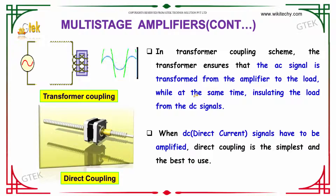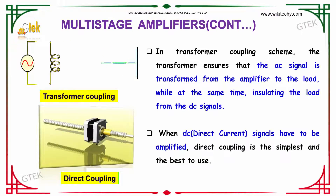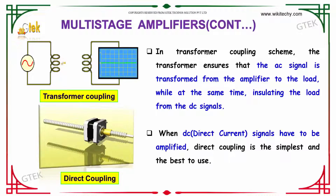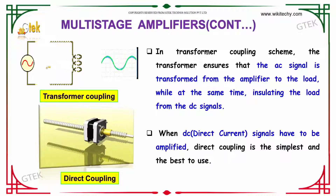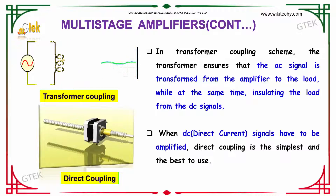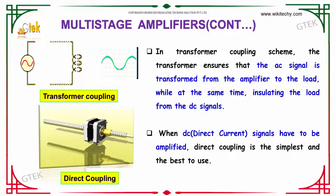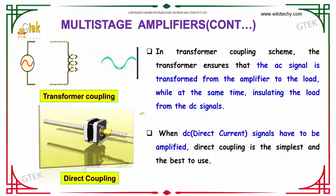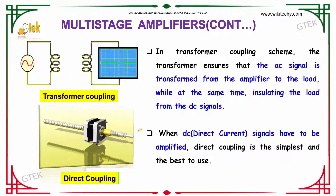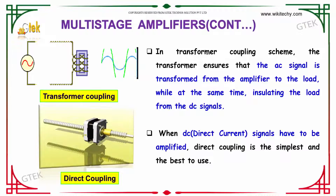In the transformer coupling scheme, the transformer ensures that the AC signal is transferred from the amplifier to the load, while at the same time insulating the load from DC signals. When DC signals have to be amplified, direct coupling is the simplest and best method to use.